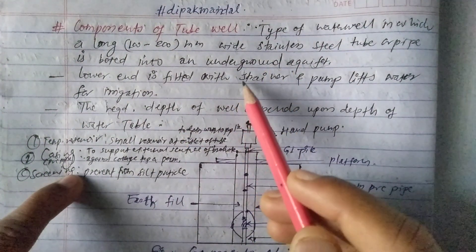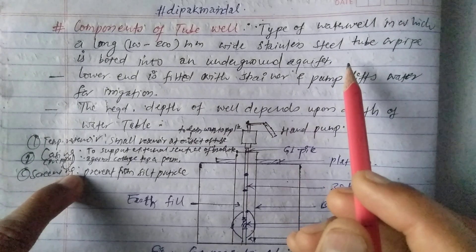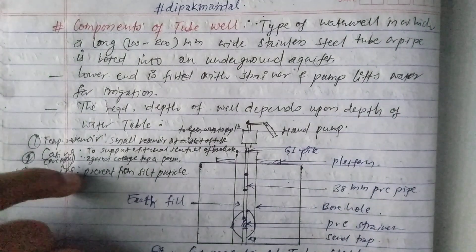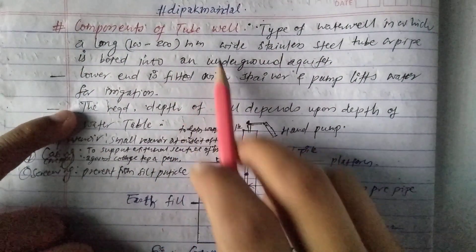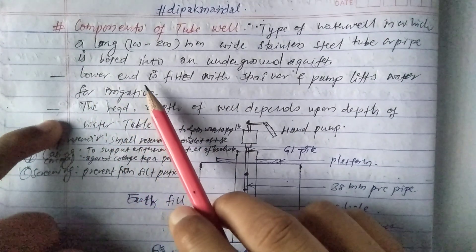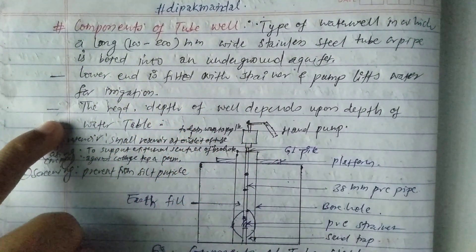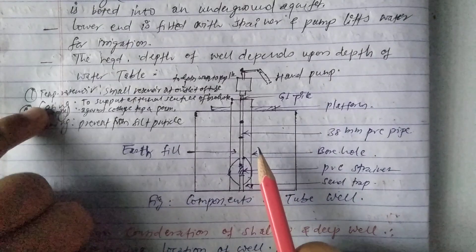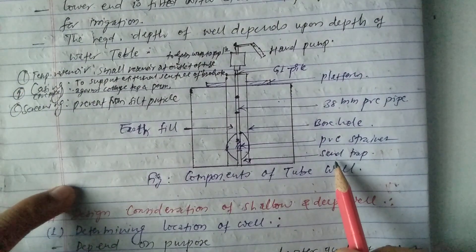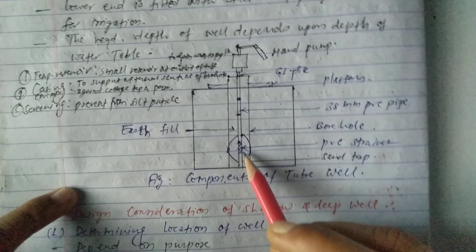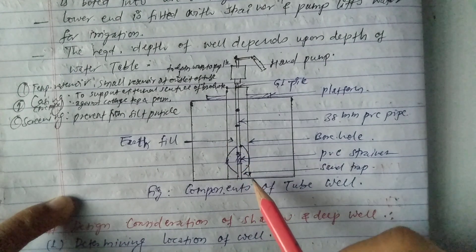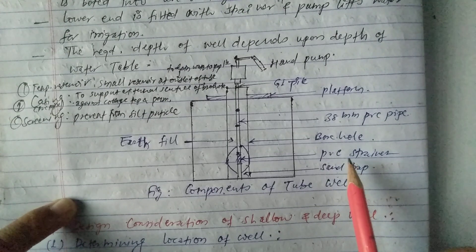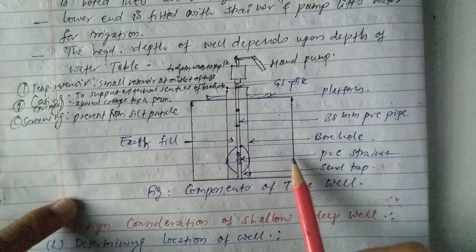During the construction of the tubule, we encounter different types of rocks — hard rock, soft rock, and different types — during boring. The lower end is fitted with a PVC strainer, and a pump lifts water for irrigation. You can see here that in the lower end of the tubule, the PVC strainer is fixed.